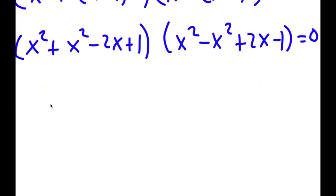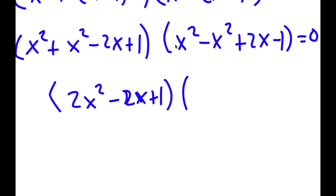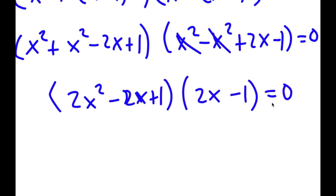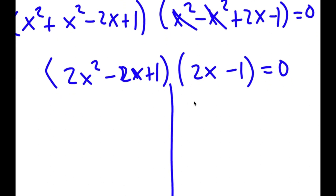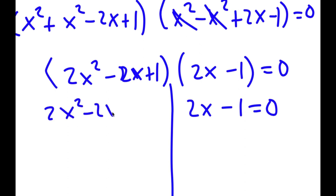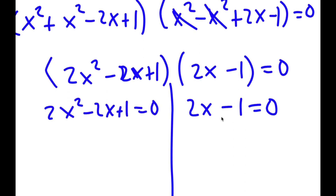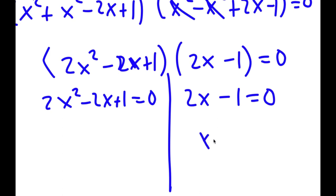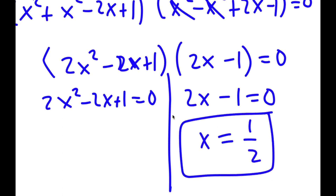Simplifying: x squared plus x squared is 2x squared. So I have 2x squared minus 2x plus 1 times 2x minus 1 is equal to 0. This gives me two equations: 2x minus 1 equals 0, and 2x squared minus 2x plus 1 equals 0. For 2x minus 1 equals 0, x is simply equal to 1 half.